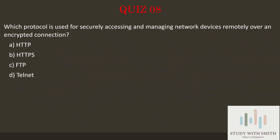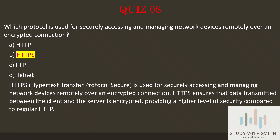Question 8: Which protocol is used for securely accessing and managing network devices remotely over an encrypted connection? Pause the video now to select the best answer. The answer is B — HTTPS (Hypertext Transfer Protocol Secure), used for securely accessing and managing network devices remotely over an encrypted connection. HTTPS ensures that data transmitted between the client and the server is encrypted, providing a higher level of security compared to regular HTTP.